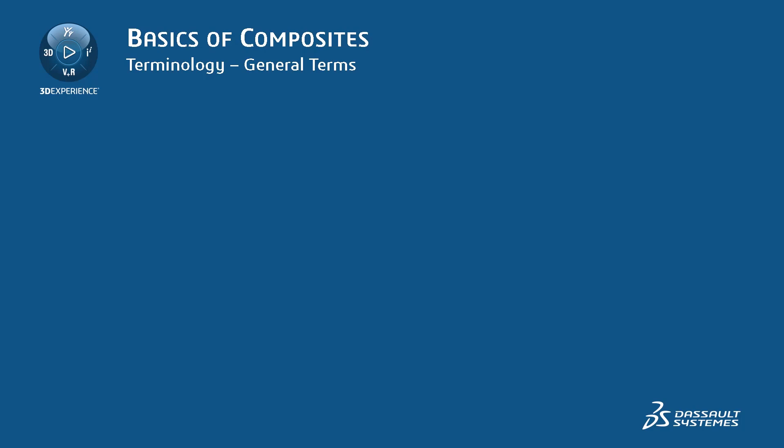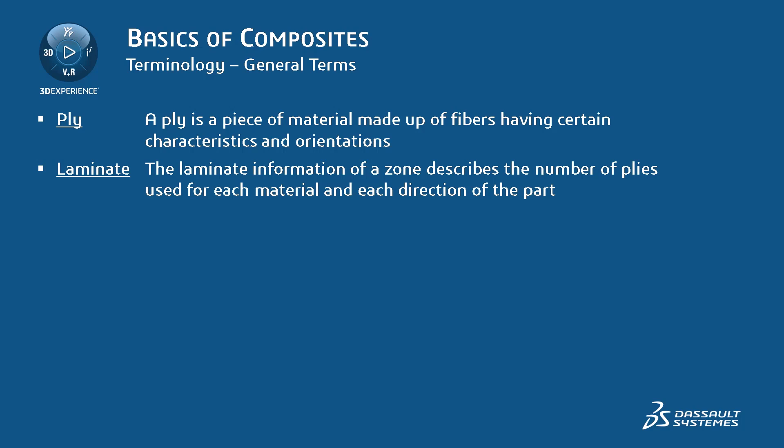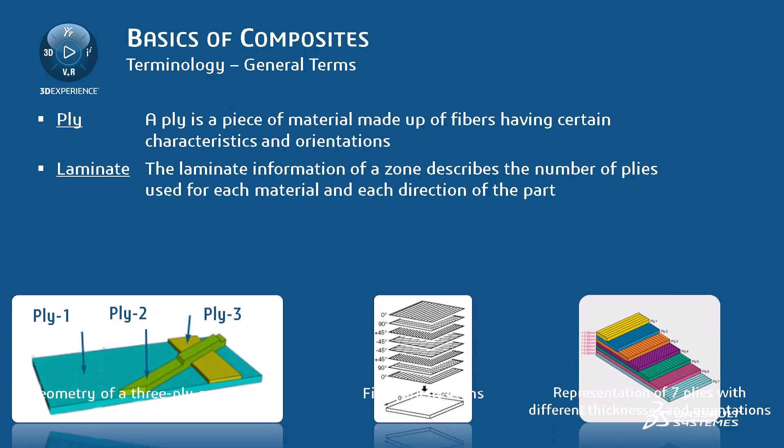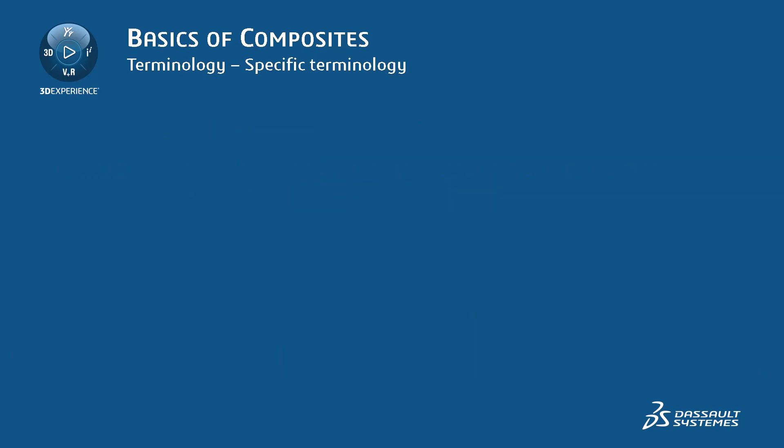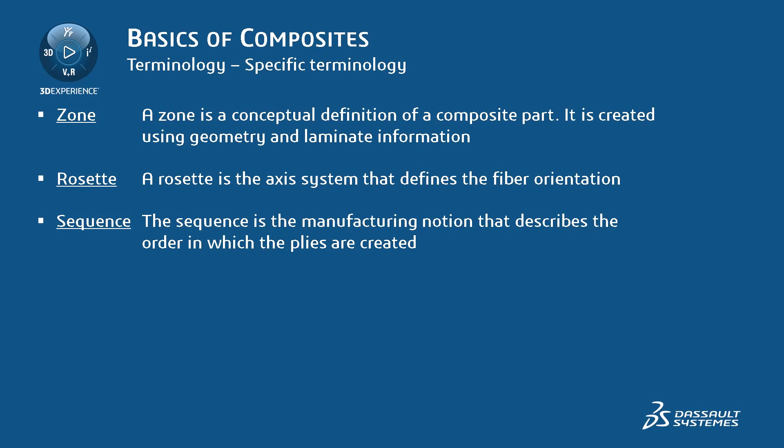Let's see some vocabulary to understand some concepts of designing composite parts. A carbon composite material consists of carbon fibers embedded in the matrix, which is usually a polymer resin such as epoxy, or a carbonaceous matrix, which binds the reinforcements together. To design a composite part, we use plies. A ply is a flat or curved arrangement of fibers, generally unidirectional, embedded in a matrix component. The geometry of a ply is defined using several contours and a set of zones. A zone is a conceptual definition of a composite part which represents areas with constant thickness and/or laminate. Plies are created from zones. The laminate information of a zone describes the number of plies used for each material and each direction of the part.